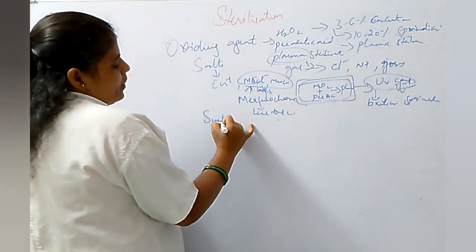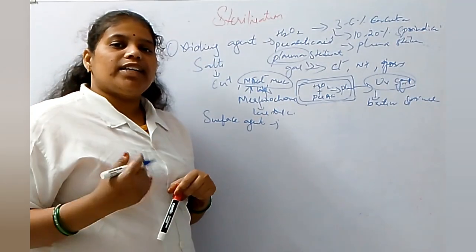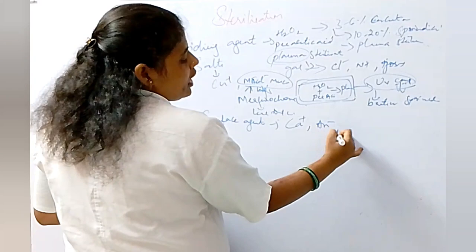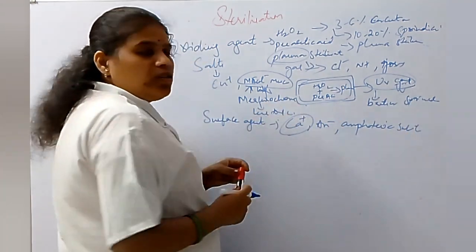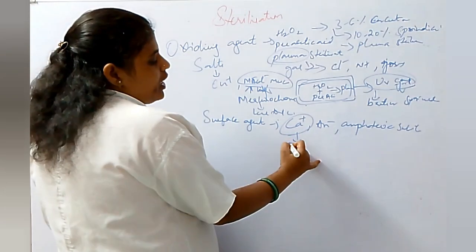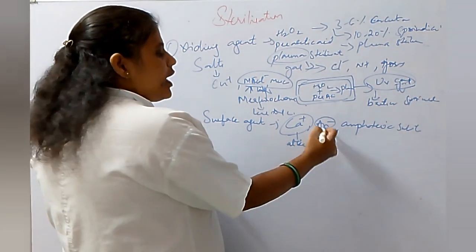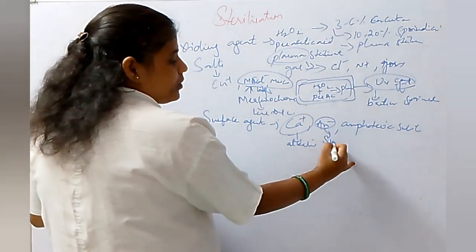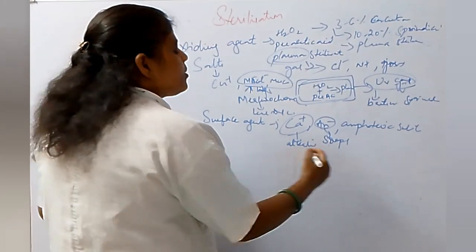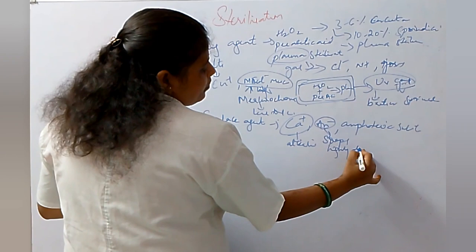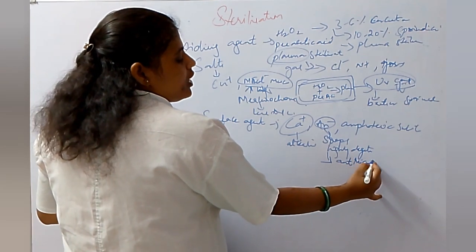Surface agents have surfactants which act as disinfectants — these are cations, anions, and amphoteric substances. Cations mostly act in an alkaline nature and have bactericidal and some sporicidal activity. Anions, for example soaps, have more detergent activity than antibacterial activity.